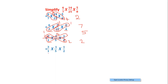We are left with 3/1 in the first fraction, 1/5 in the second, and 1/2 in the third. Last, we multiply all the numerators together and all the denominators together. So we have 3 × 1 × 1 in the numerator and 1 × 5 × 2 in the denominator. After multiplying, the numerator gives 3 and the denominator gives 10. Hence the final answer is 3/10. This is how we do the multiplication of fractions.